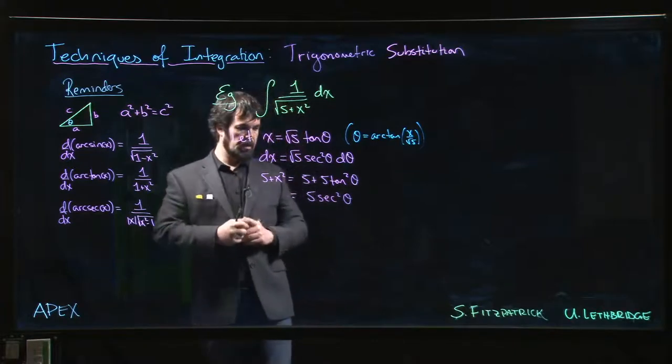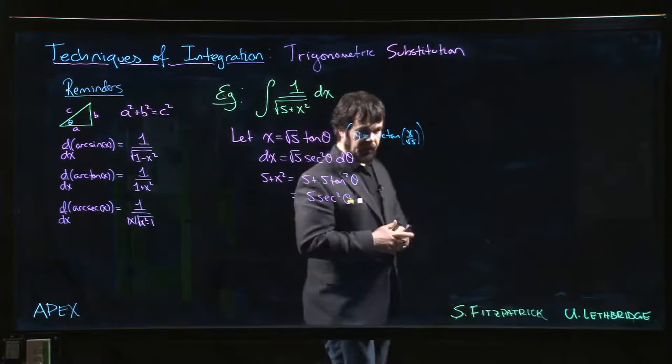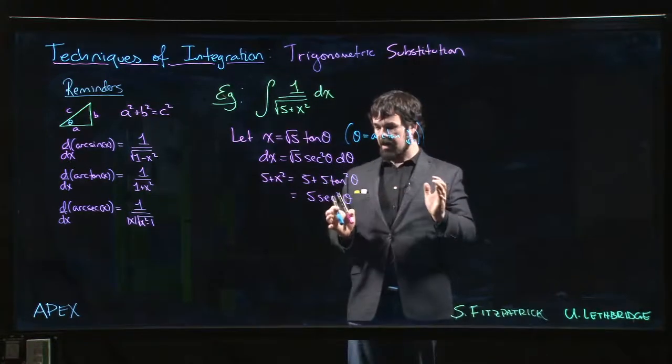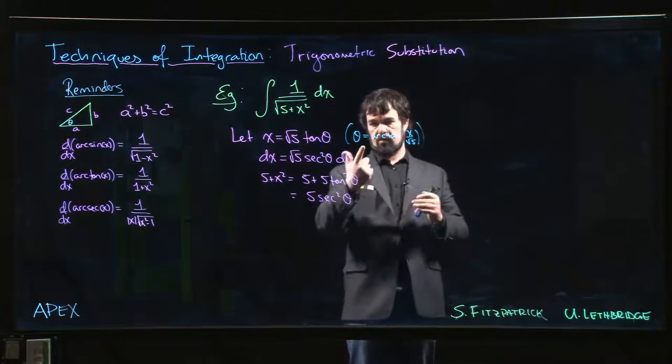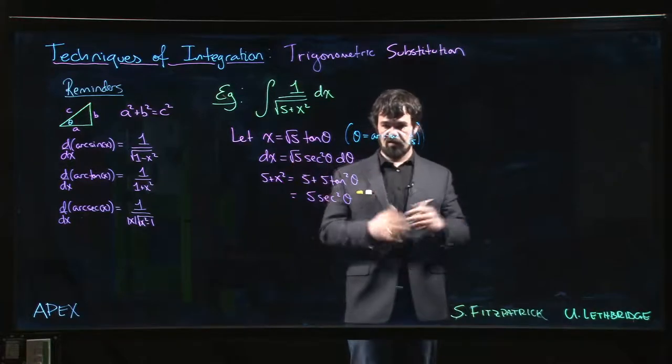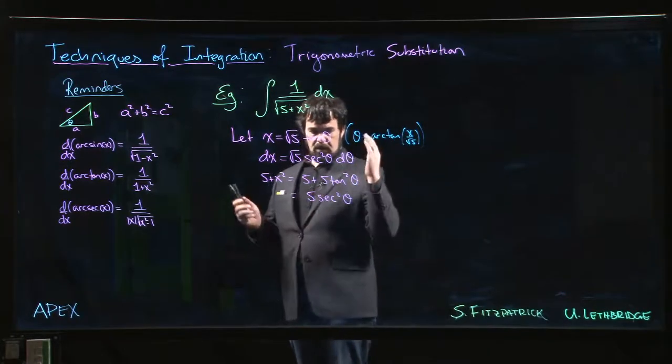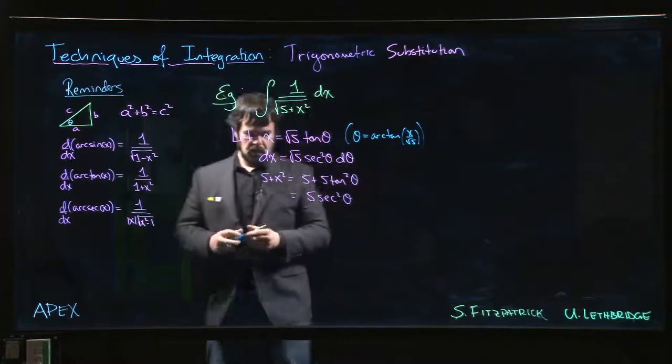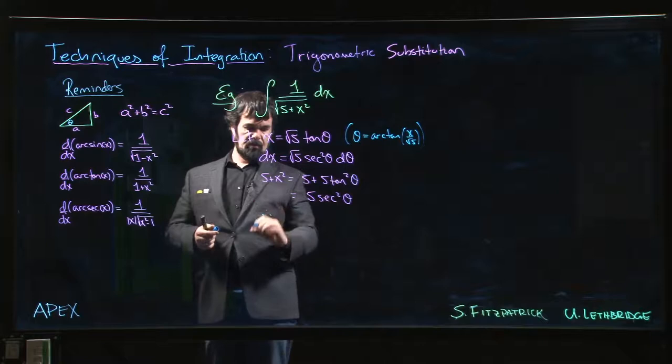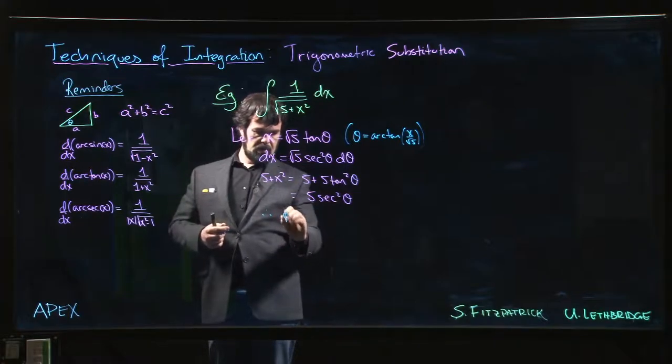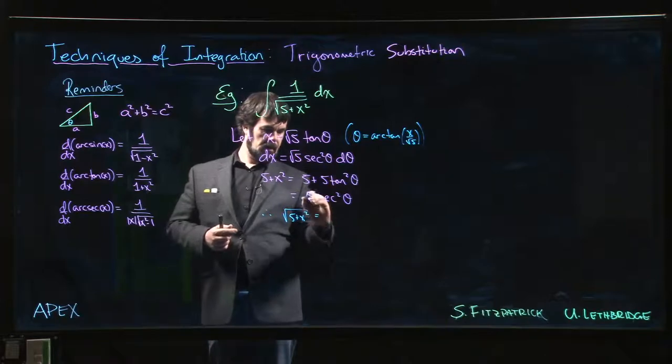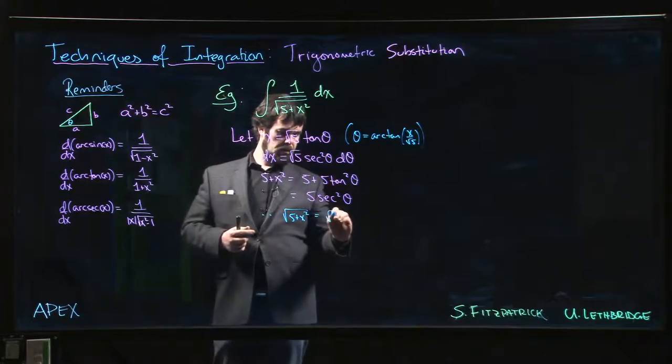...secant squared theta. Okay, and once again, secant is defined and positive on the range of arctan, right? Theta is an angle in the range of arctan, so secant is a positive number. So if we have to take a square root, which we do, we don't have to worry about sign, right? So we know that the square root of 5 plus x squared is root 5...